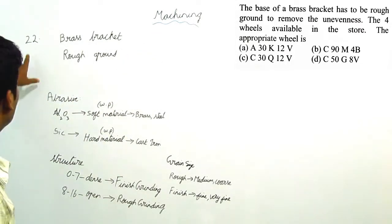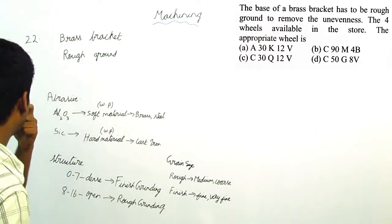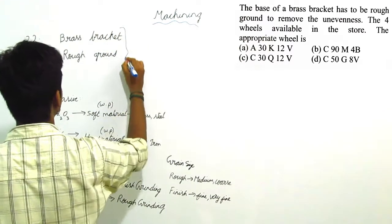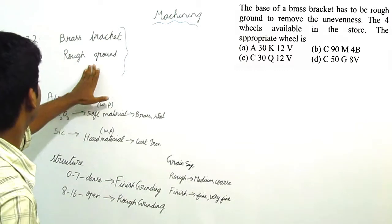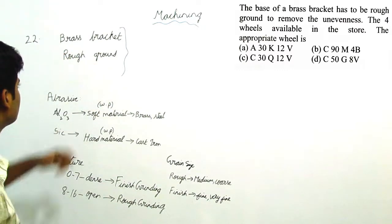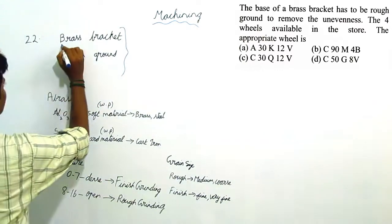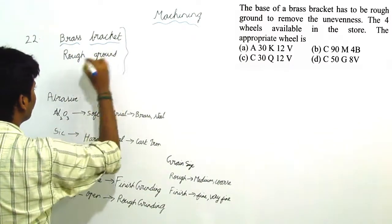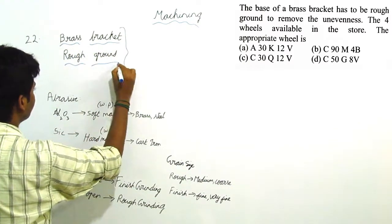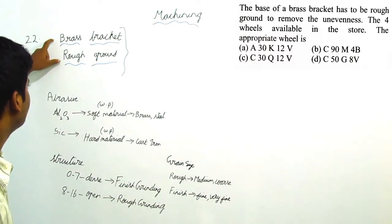This is the second problem with the given data. These are the key words in the question: brass bracket and rough grinding. These are the two key words given in the question.